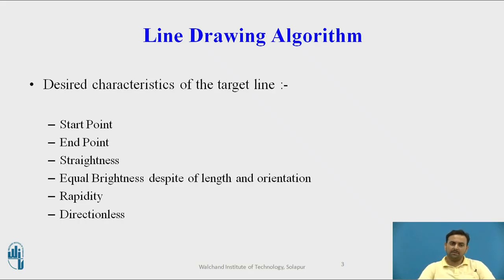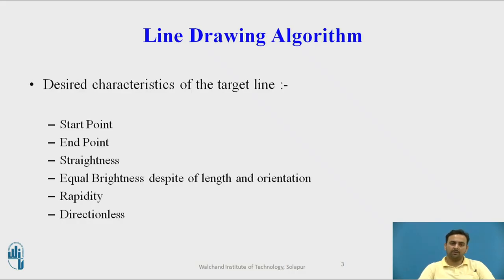Same is the end point. The end of the line can also be denoted by the x and y coordinate of a particular line. So the starting and ending point of the line will automatically generate the intermediate points, which will connect that point and make a line.